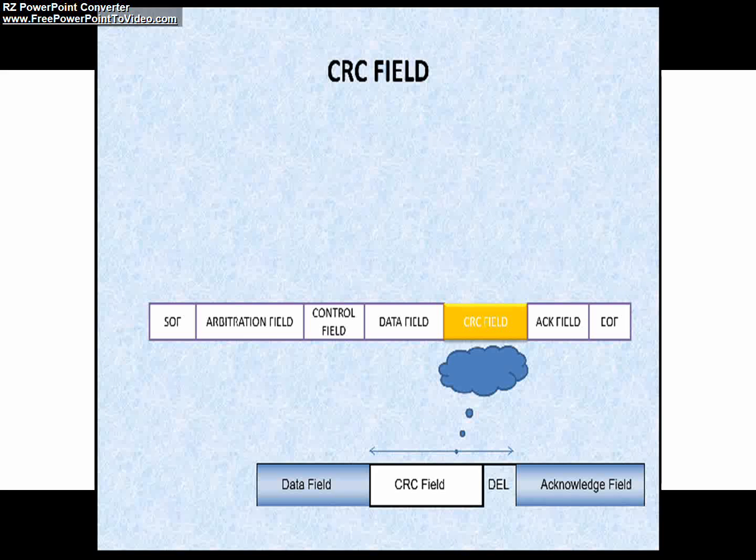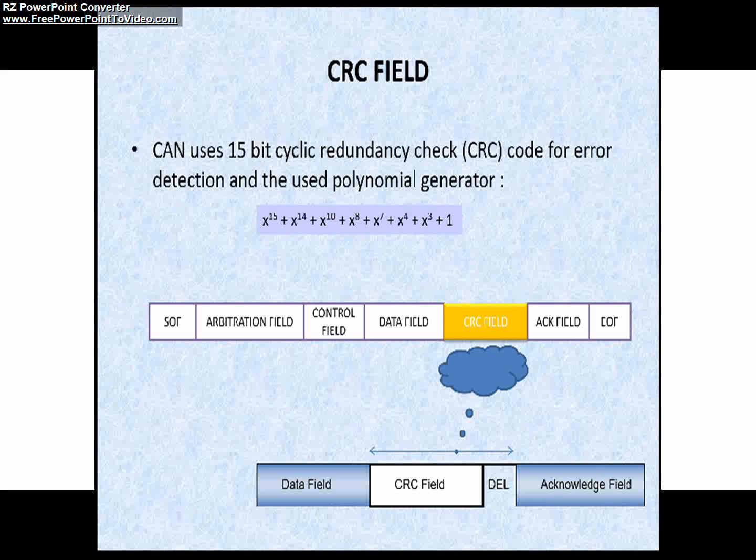CAN uses 15-bit cyclic redundancy check or CRC code for error detection and the used polynomial generator is x^15 + x^14 + x^10 + x^8 + x^7 + x^4 + x^3 + x + 1.